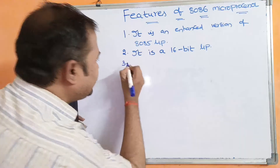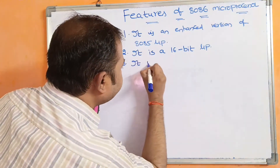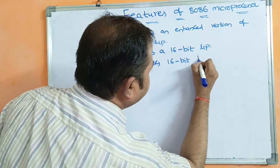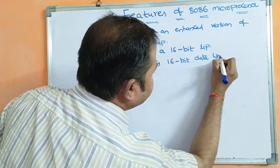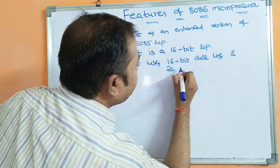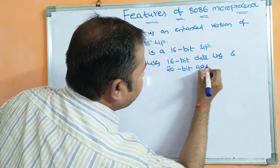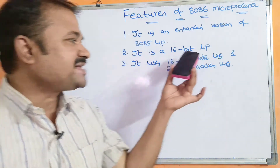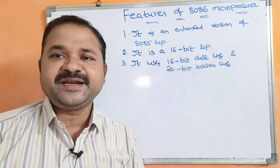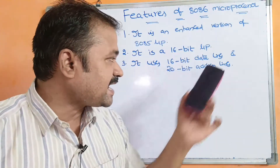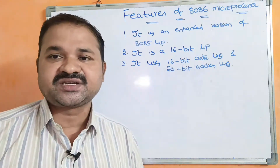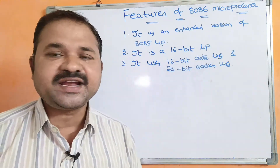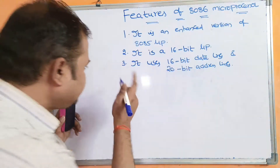It uses 16-bit data lines and 20-bit address lines. The capacity of the registers is 16-bit, whereas the capacity of the address bus is 20-bit. So the size of the address bus is 20-bit and the size of the data bus is 16-bit.